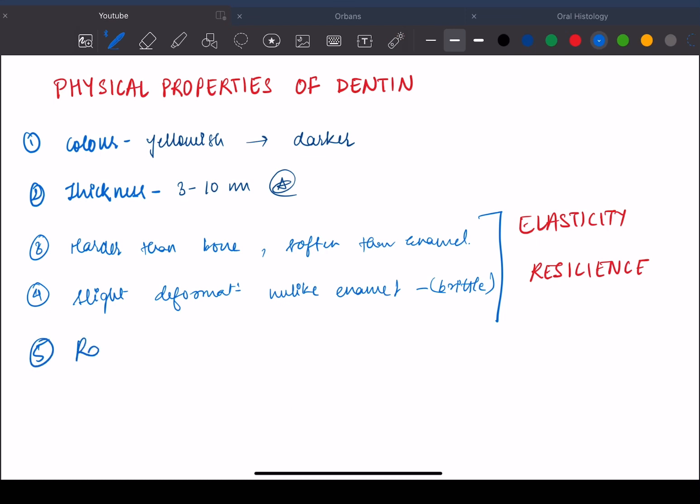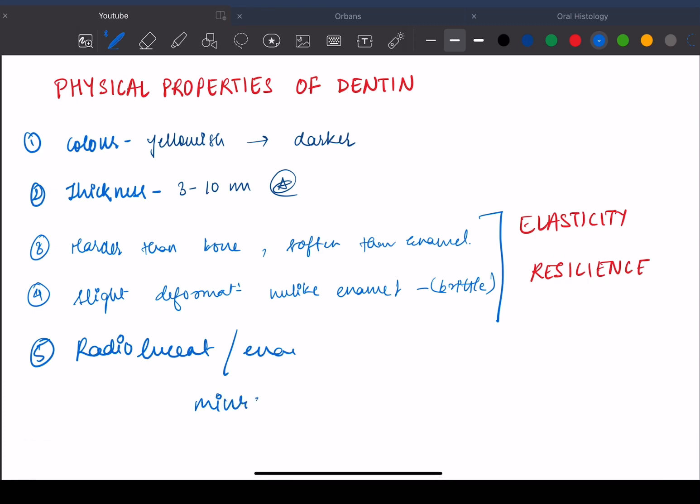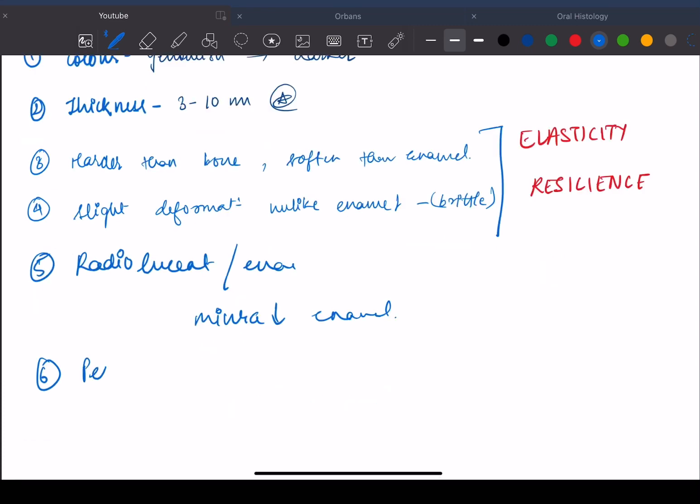It is more radiolucent as compared to enamel since the mineral content of dentine is less than enamel. Then we have permeability. So dentine is permeable due to the tubules present throughout the surface. If these tubules get blocked due to some reason then the permeability will reduce.